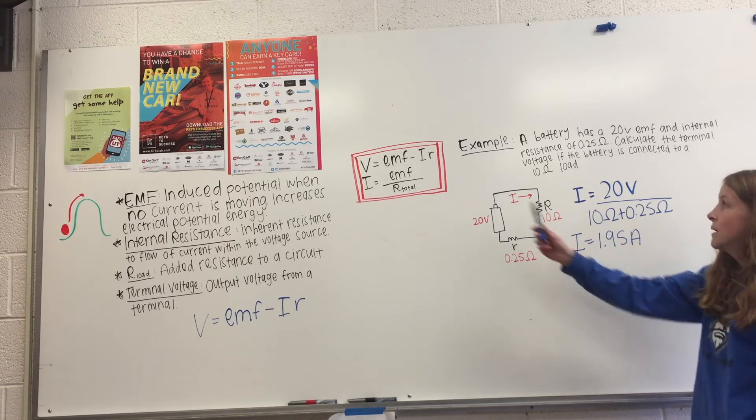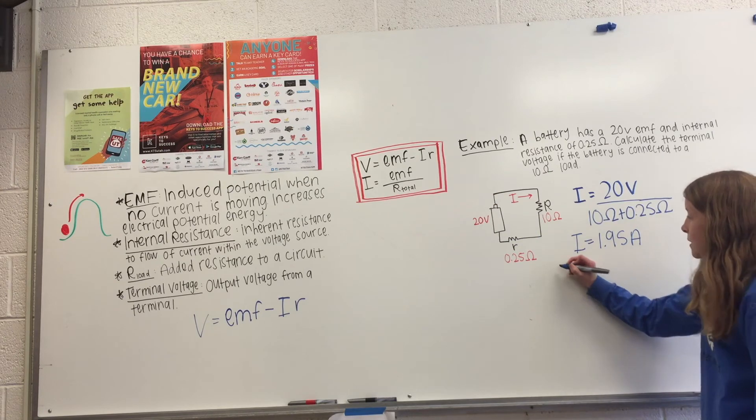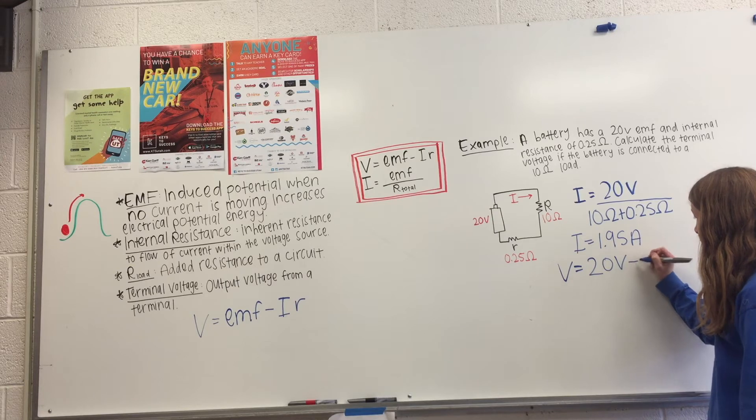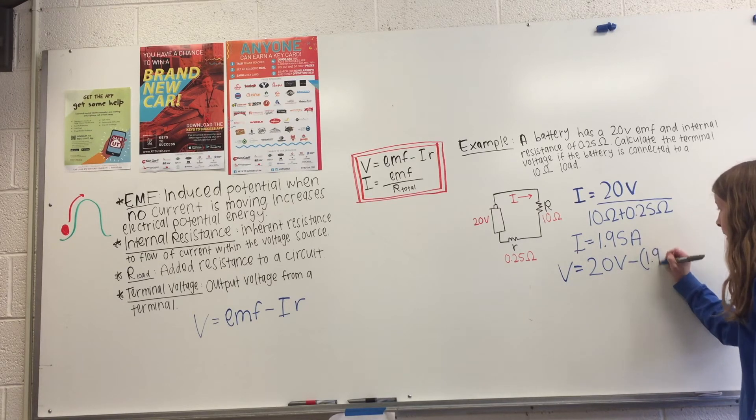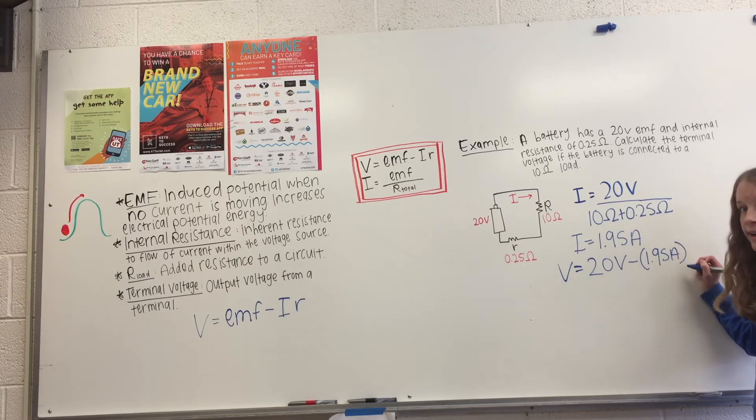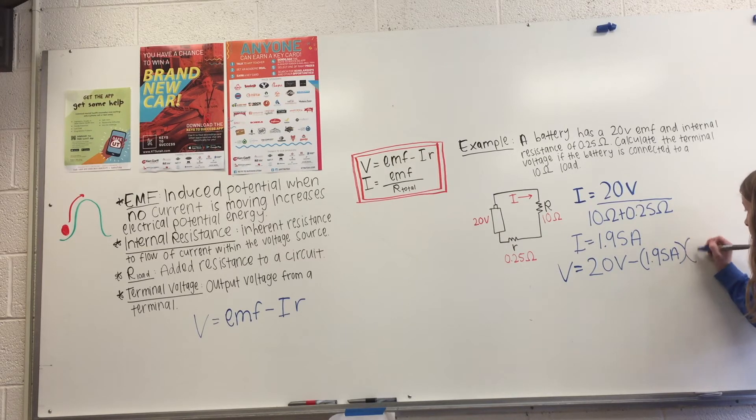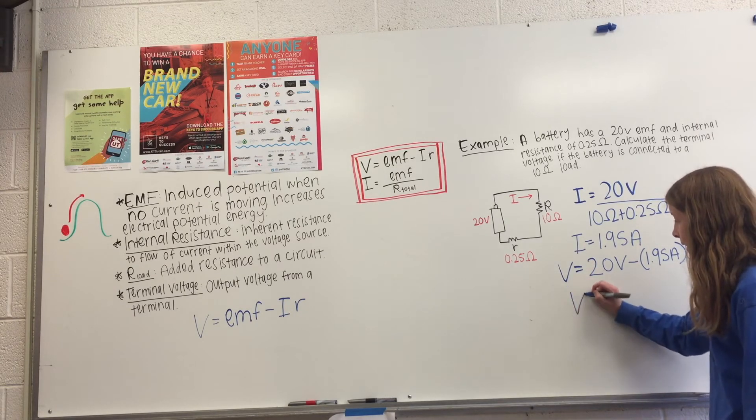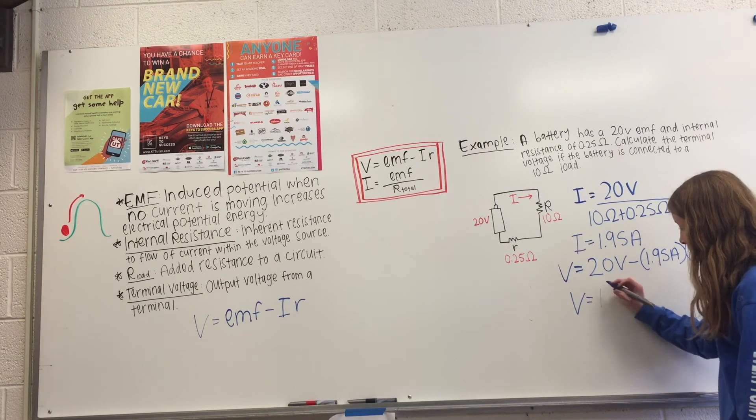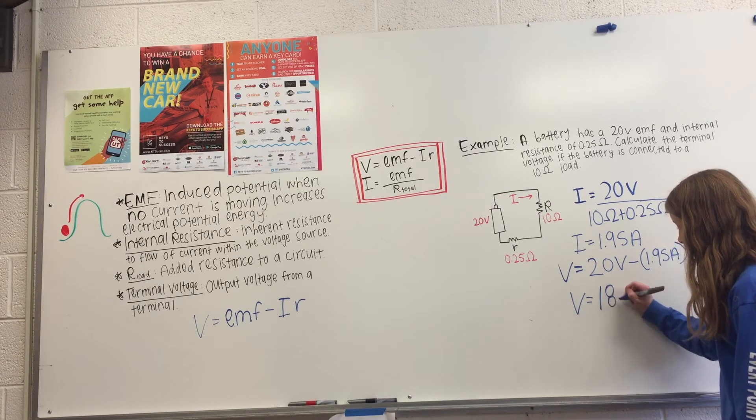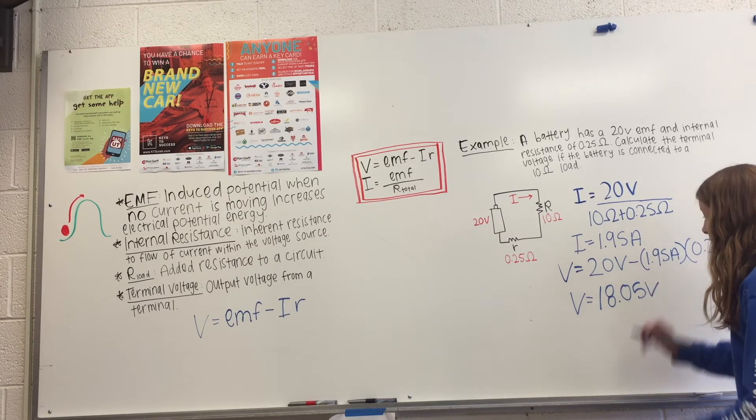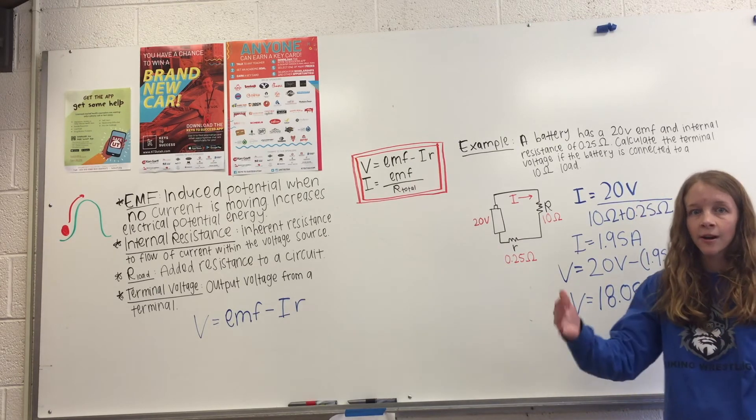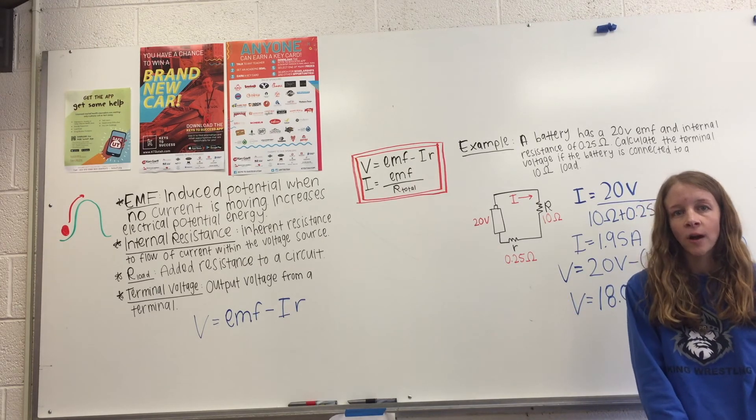And then we can plug that into our terminal voltage equation. So we have voltage equals 20 volts minus our current, 1.95 amps, times our internal resistance, which is 0.25 ohms. And if we plug that all in, then we get an answer that our voltage is 18.05 volts. And this makes sense that our terminal voltage is less than our EMF of 20 volts because we have current flowing. And so it's going to be smaller than our EMF.